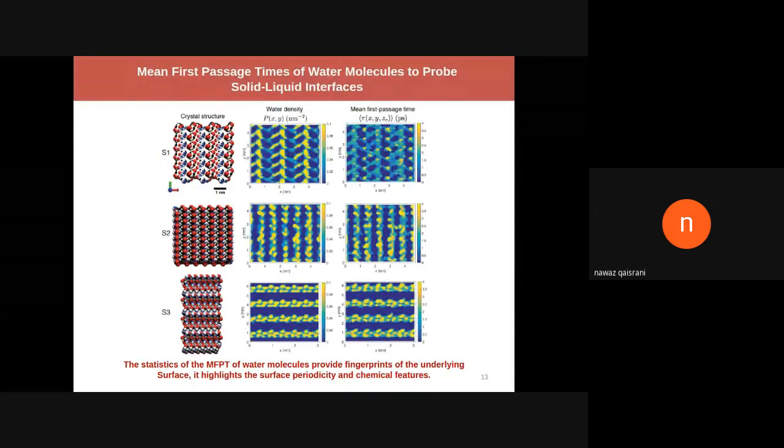For the three surfaces, you can see how the first passage time actually captures the features of the underlying surface. On the left, the 2D density is a static metric—you take many snapshots and average over time, telling you what the underlying surface is. On the right column, you see the mean first passage time, which tells you more detail about the underlying surface.